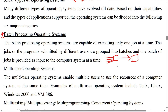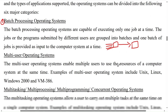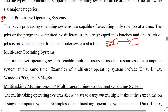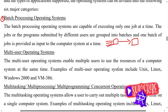The batch processing operating system processes jobs in batches. Multi-user operating system enables multiple users to use the resources of a computer system at the same time. Examples of multi-user operating systems include Unix, Linux, Windows 2000, and VM386.